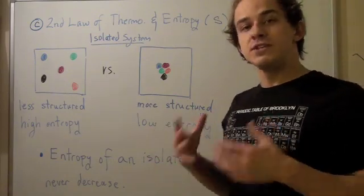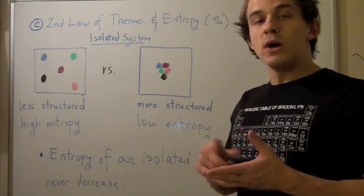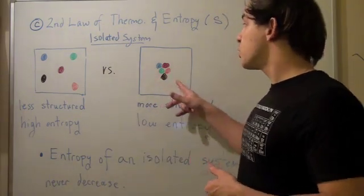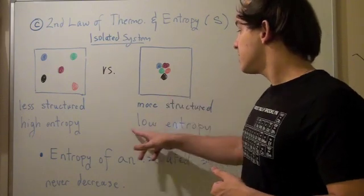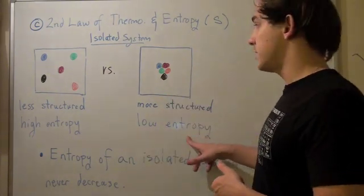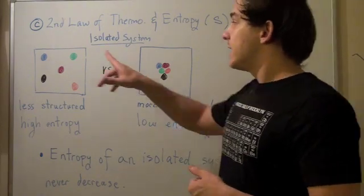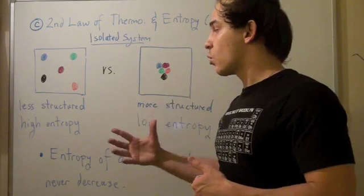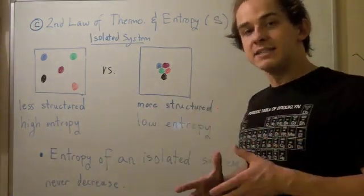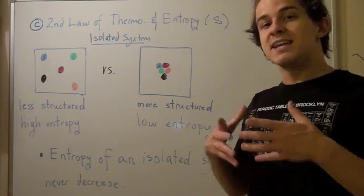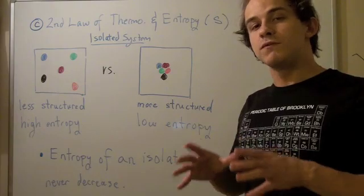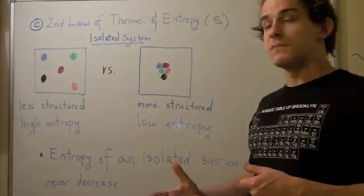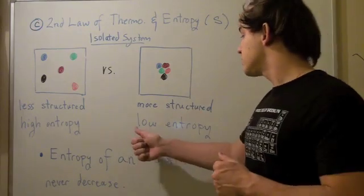So let's go back to our definitions of entropy. One definition states that entropy is the measure of the disorder of a system. Since the ball arrangement is more structured and more ordered, it's less disordered, which means there is a lower entropy. Here, in the scattered system, there's less structure and less order, so it's more disordered and there's a higher entropy. Using our second definition — entropy is the tendency of a system to take its most probable form — the scattered system is more probable, so it has higher entropy, and the structured system is less probable, so it has lower entropy.